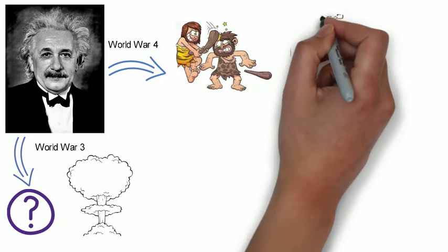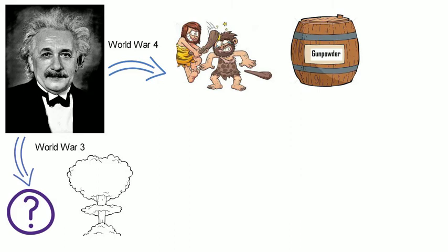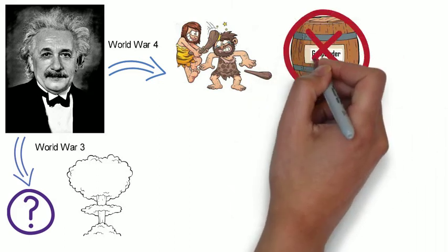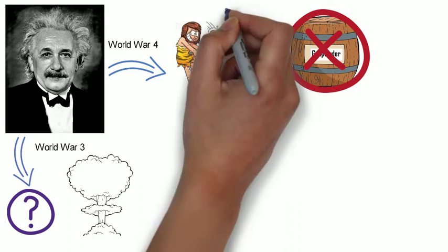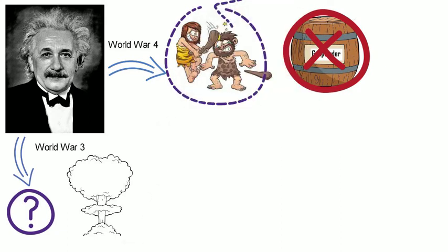The result would be that even the use of gunpowder would be unknown to the people who would fight the Fourth World War. And they would have been reduced to the earliest way of life that we find in the beginning of civilization.